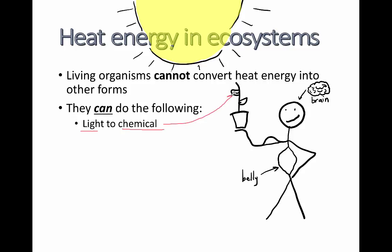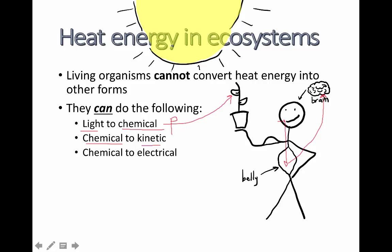Living things can, however, make these energy conversions: light to chemical energy — that's what photosynthesis does, converting light into glucose; chemical to kinetic energy — when we eat and use glucose to power metabolic processes and brain function; chemical to electrical energy — transmitted through our nervous system; and chemical to heat energy — when we use glucose, fats, and proteins to maintain body temperature at around 37 degrees Celsius for internal homeostasis.